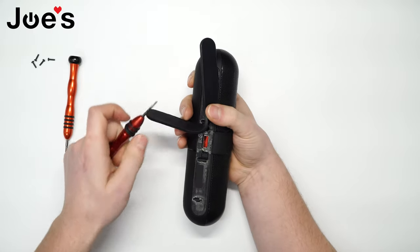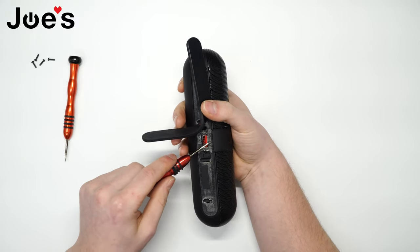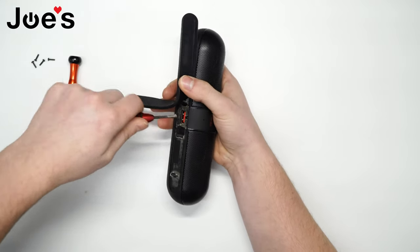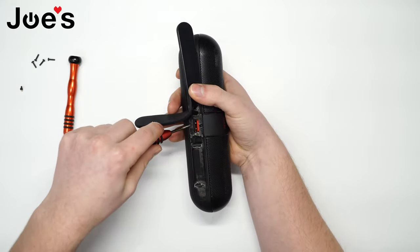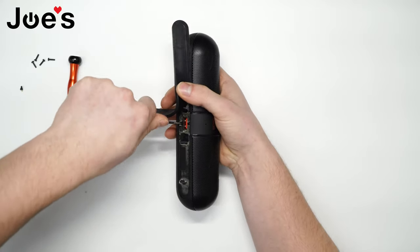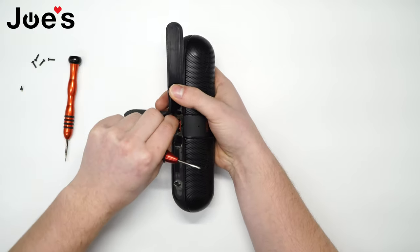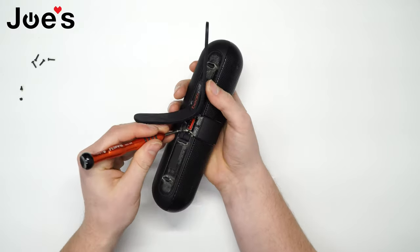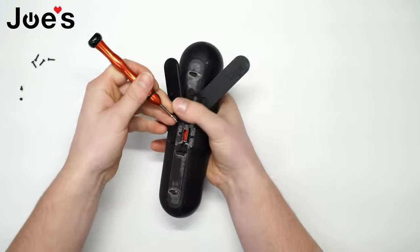Next, remove the two screws holding the center ring. They're a bit smaller. Grab your flathead and pry out this part.